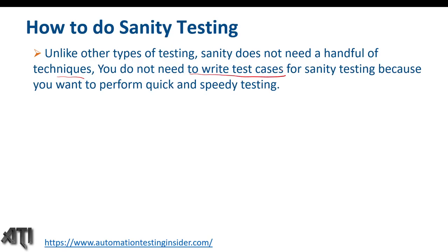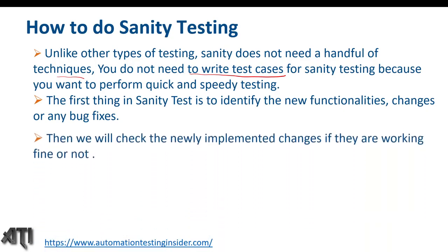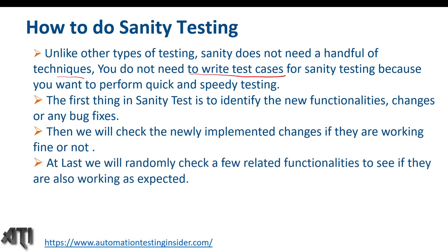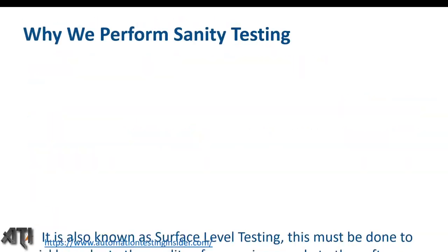In sanity testing, first identify whether new functionalities, changes, or bug fixes are working at a very initial level — not going deep. Then check whether newly implemented changes are working correctly. Finally, randomly check a few related functionalities. If all is good, the release can pass for further testing; if any functionality fails, reject the build.